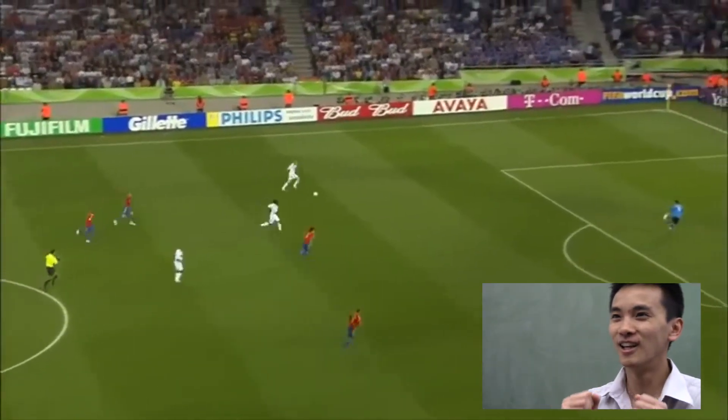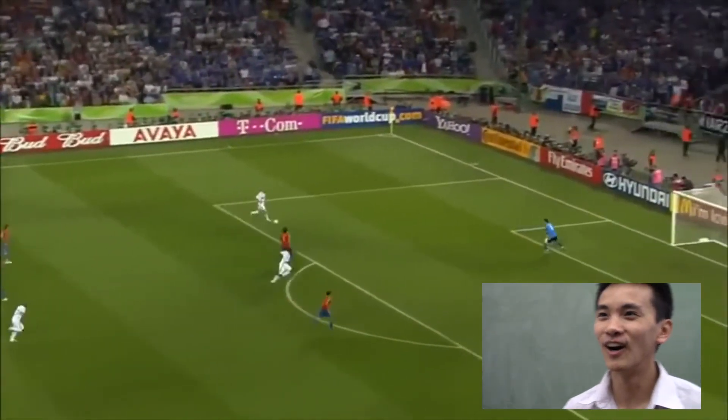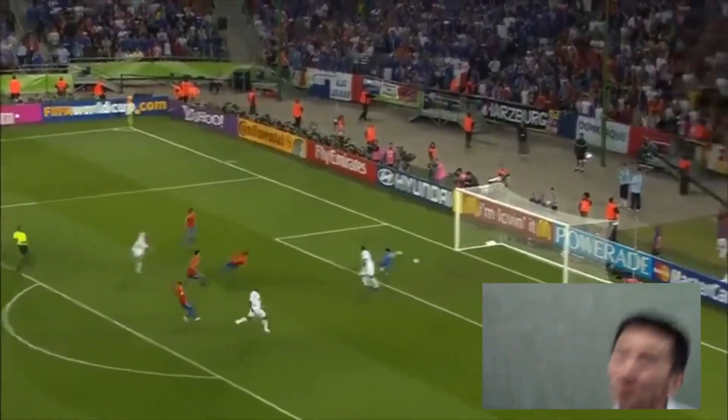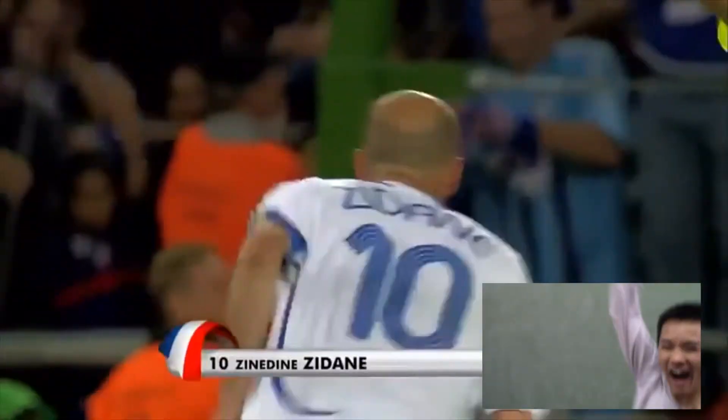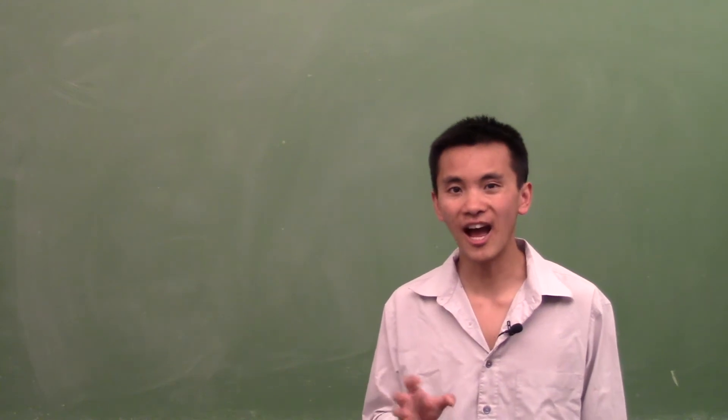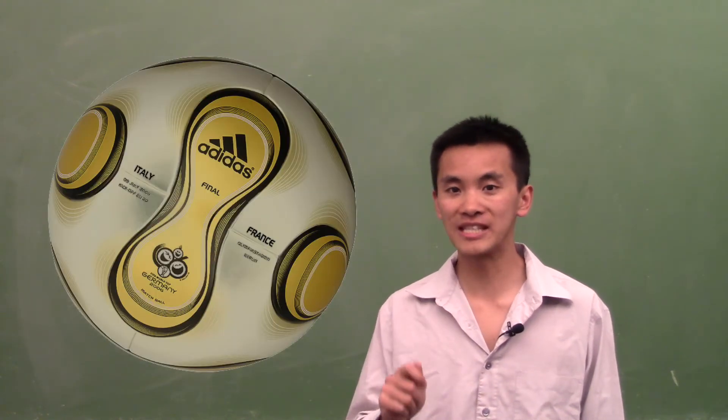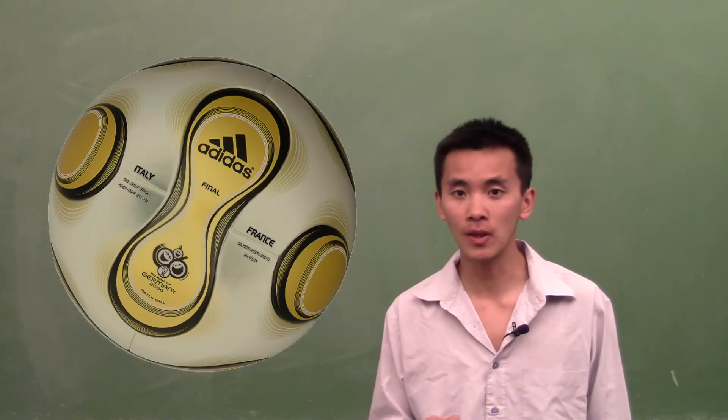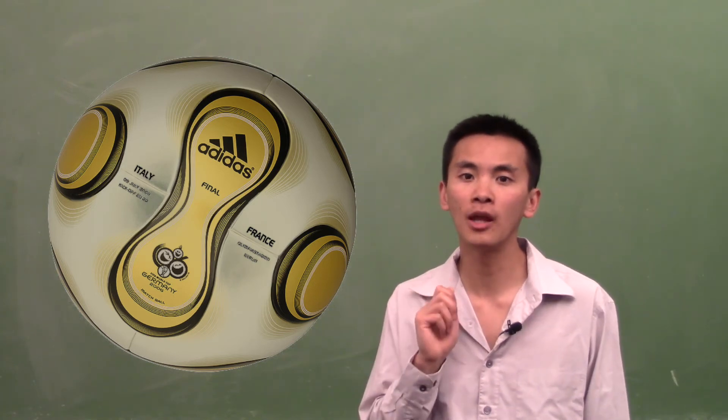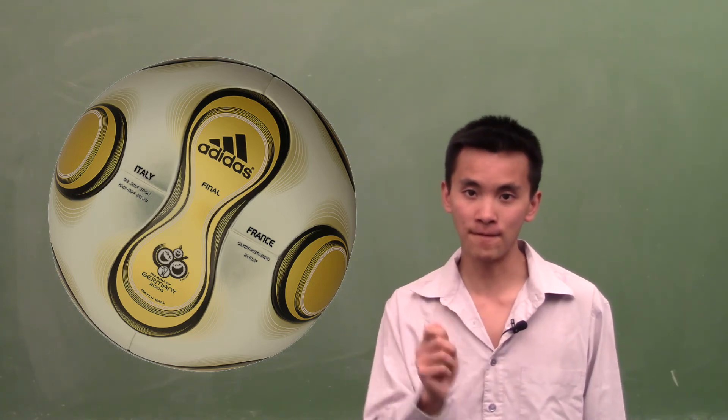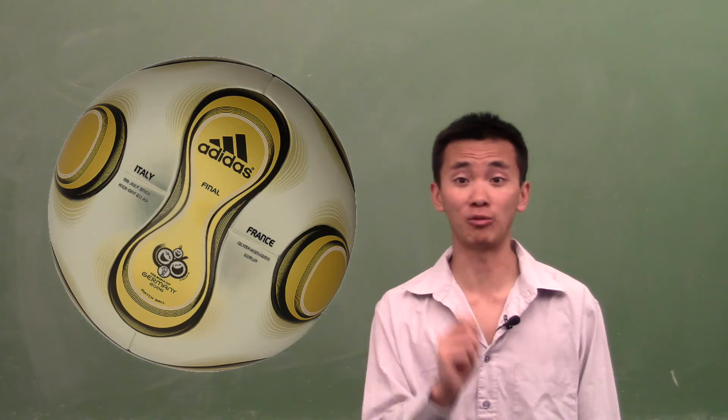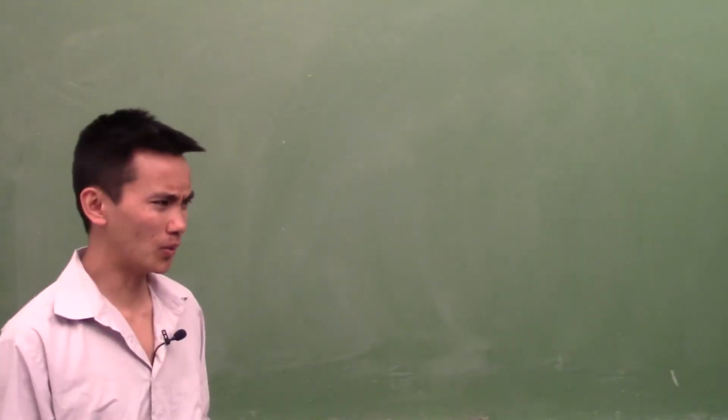And that changed everything! In 2006, Adidas introduced the Teamgeist. This ball is made of only 14 faces, and yet it's rounder than the truncated icosahedron.